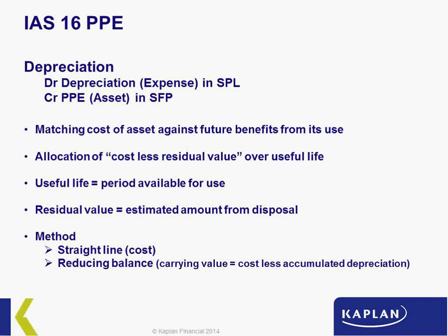The only item of PPE not depreciated is land, because land is deemed to have an infinite life — you cannot divide by infinity. We have two methods of depreciation: straight-line and reducing balance. Straight-line gives the same amount of depreciation every year — cost less residual value divided by useful life. Reducing balance gives a higher charge when the asset is new, getting smaller as it ages, applying a percentage to the carrying value each year.